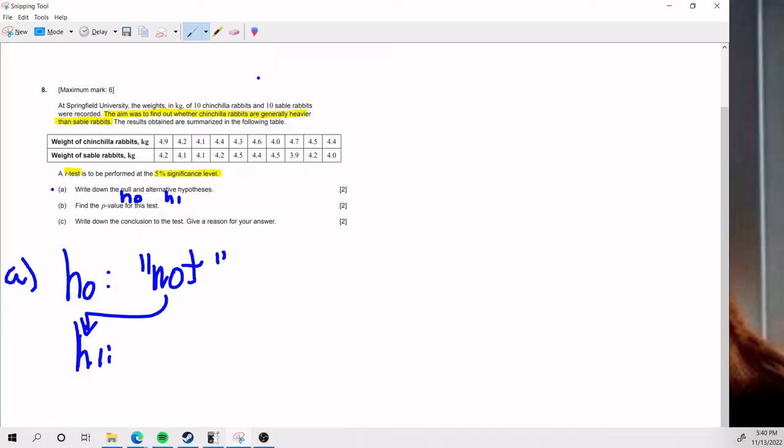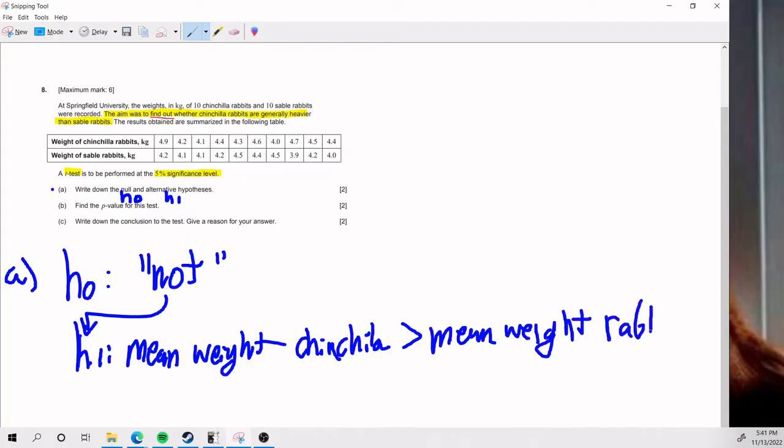So what the heck is your H1? Your H1, your alternative hypothesis, tends to be what you're trying to find out. What you're trying to find out. Look at that. So what I'm trying to find out in this case is whether chinchilla rabbits are generally heavier than sable rabbits. So in fancy math language, I'd say something like mean weight chinchilla has to be greater than mean weight rabbit. And so that would mean H0, the not version of that, would be that the mean weights are just like equal.